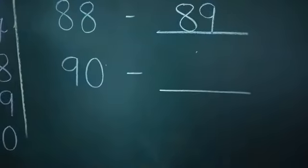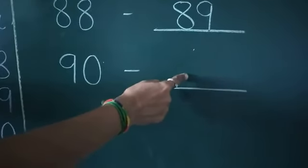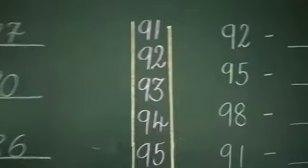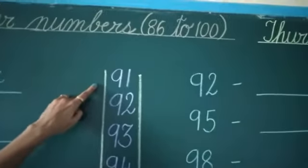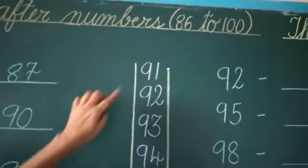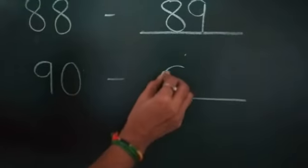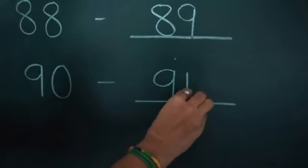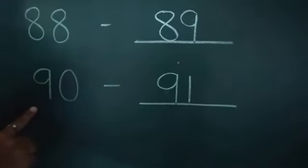Next, number 90. Which number comes after? Look at here — number 90. Which number comes after? 91. So number 91 comes after number 90.